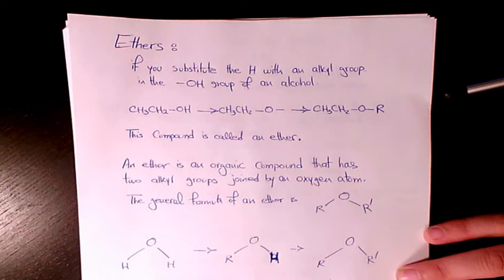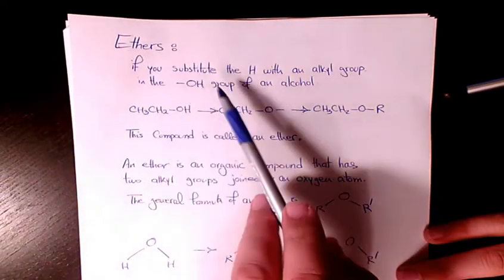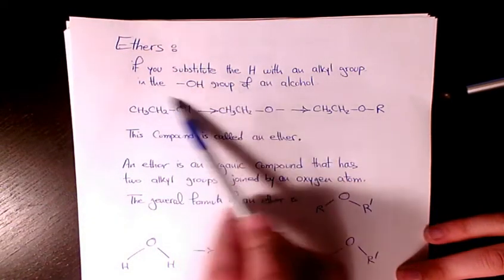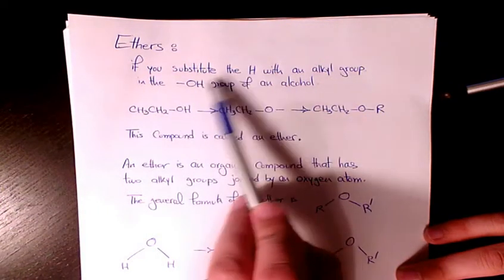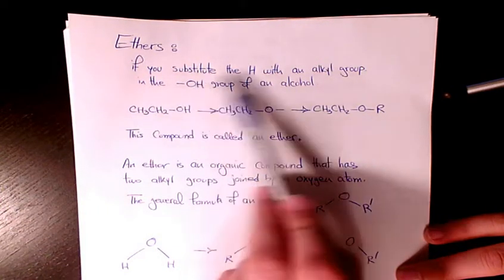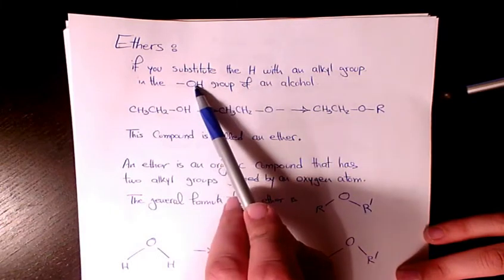in the OH group of an alcohol, we can produce ether. So it means that ethers are very similar to alcohols. Alcohols have an OH group, but if you take the H out and substitute an alkyl group, you